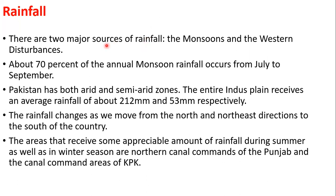One of the major sources of rainfall in Pakistan is monsoon and western disturbance. The rains that occur from July to September in Pakistan — this is the long spell of the monsoon. There is also a shorter spell of the monsoon that occurs in the winter season.